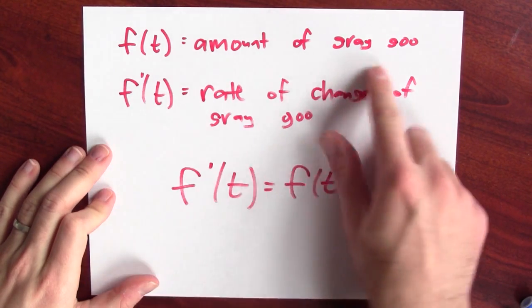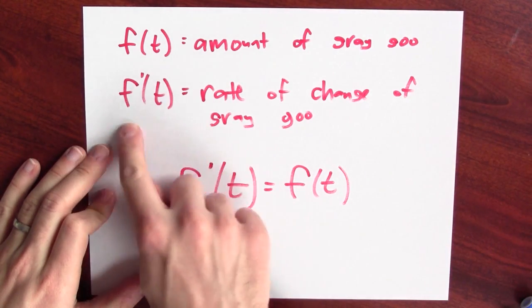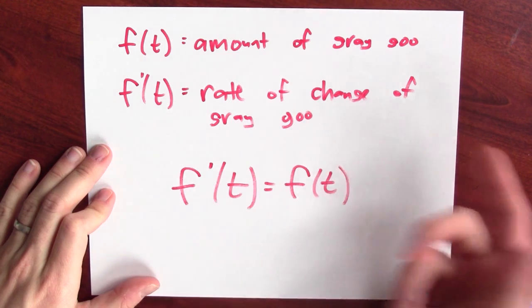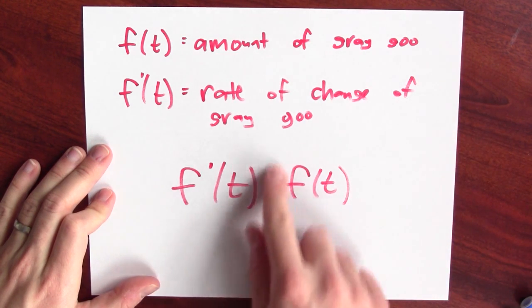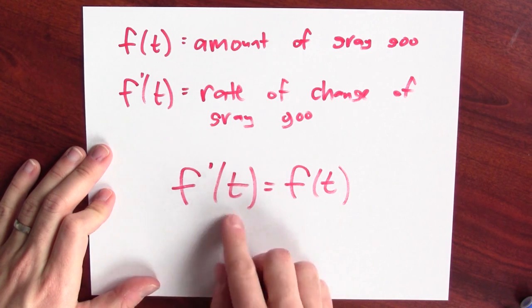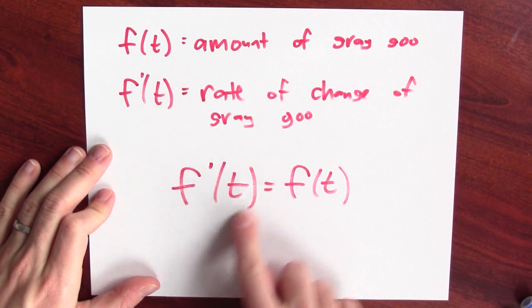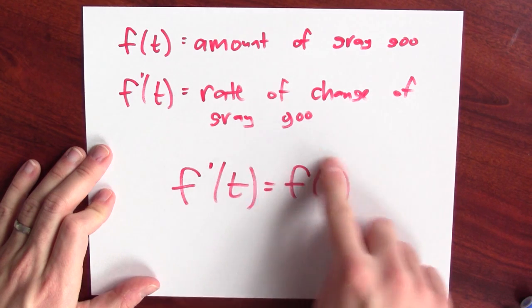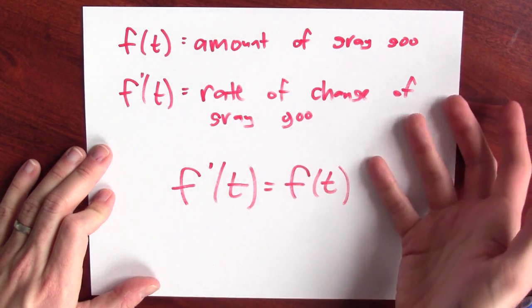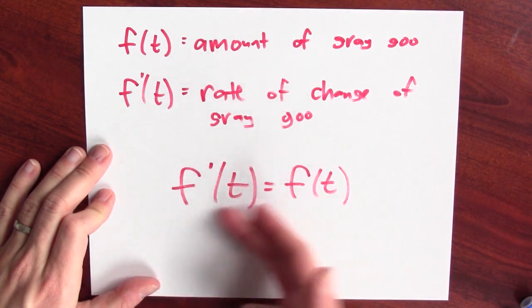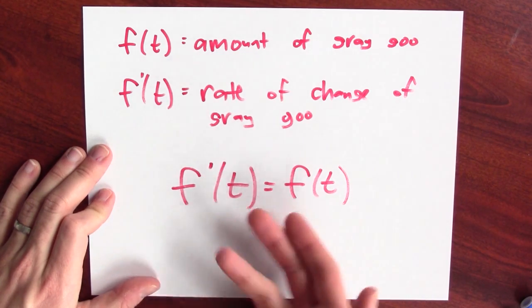f of t will be the amount of gray goo, and the derivative of f of t is the rate of change in the amount of gray goo. If the proportionality constant is one, what I'm really saying is that the rate of change in the amount of gray goo is just the amount of gray goo. If there's more gray goo, the rate of change in the quantity of gray goo is also higher.